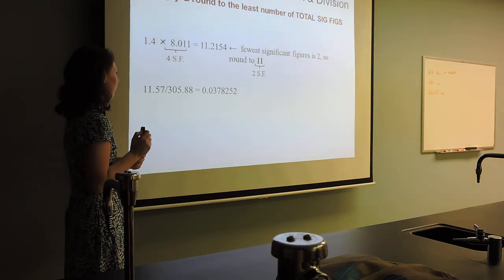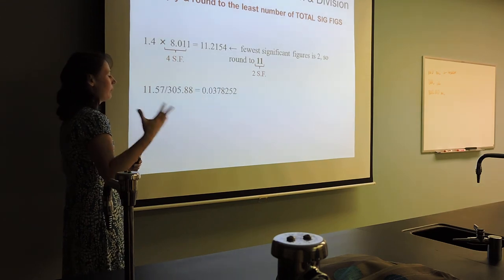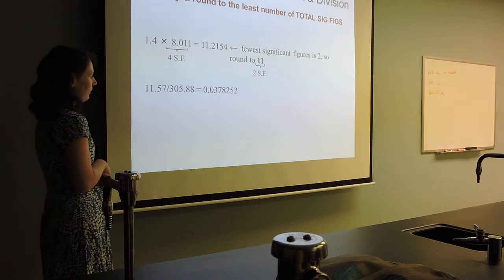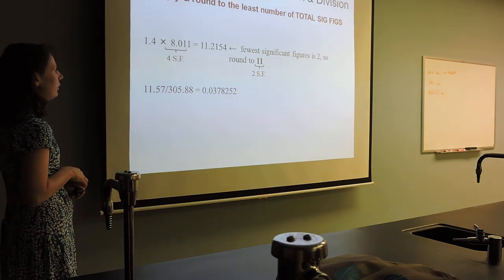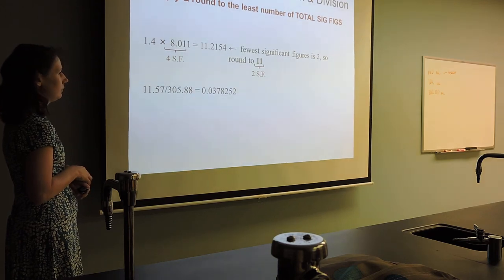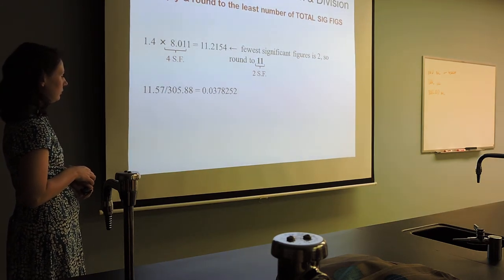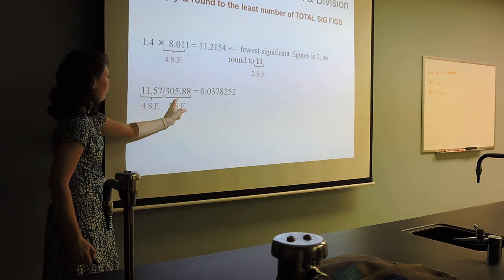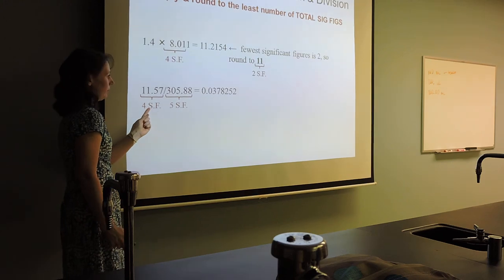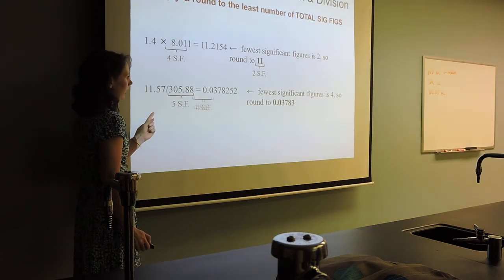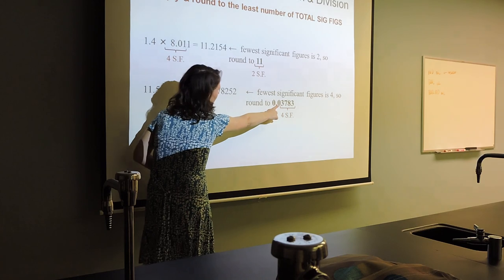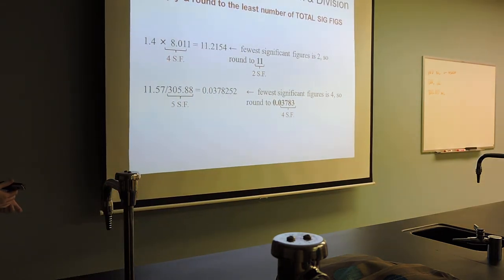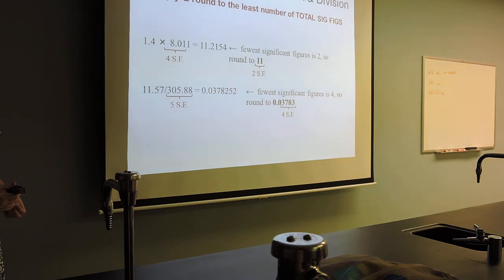Here's one with division — the chemist was being a little better here: four sig figs versus five. So how many sig figs will be in my final answer? Four, because four is the lesser of the two. My final answer has four sig figs. Again, insignificant zeros get dropped.